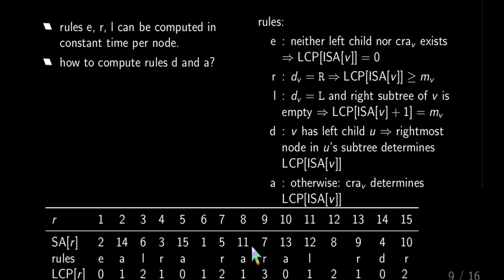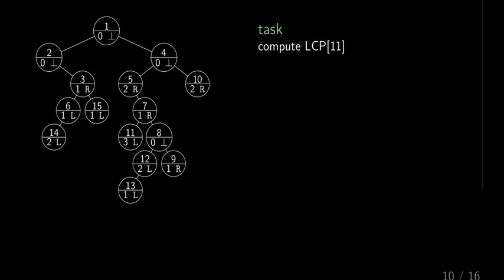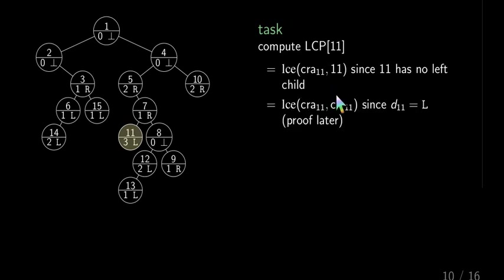So let's focus on the node 11, where we said that LCP is 1. So why is that? To compute this LCP value, we have to denote that this LCE is actually the LCE between cray 11 and 11, because we have no left child. Like I said previously, this is the preceding suffix. Then we use later the proof that shows that this is actually this one here.